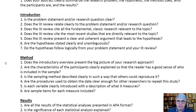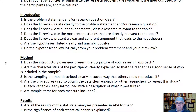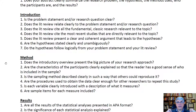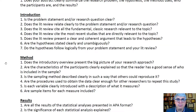Your introduction basically ends with your hypotheses. Then you go to the method section, which starts with an introductory overview presenting a big picture of your research. In that first paragraph, explain where the method is going. Then ask: are the characteristics of the participants clearly explained so the reader has a good sense of who actually participated in the study?